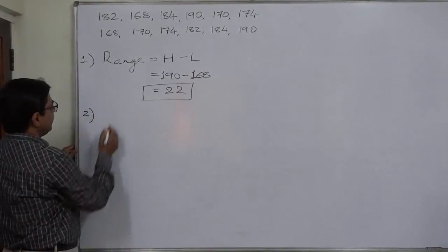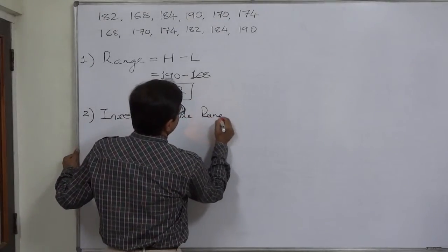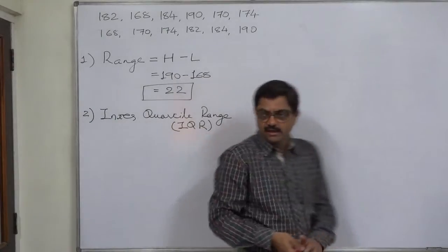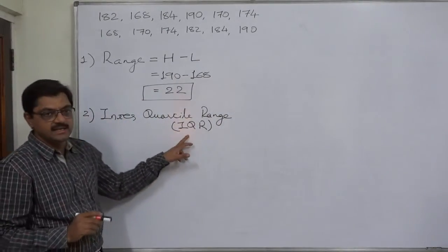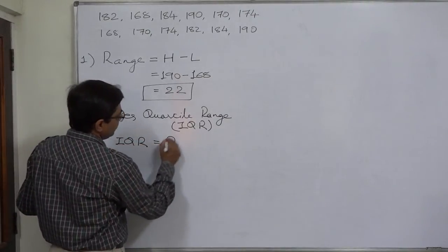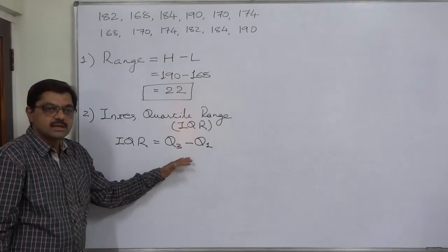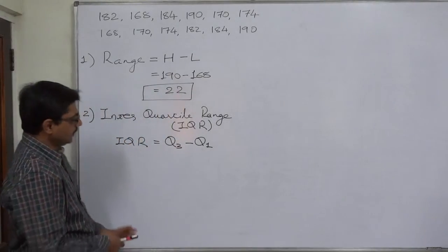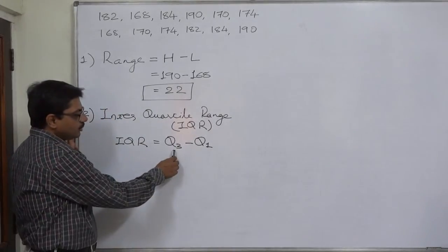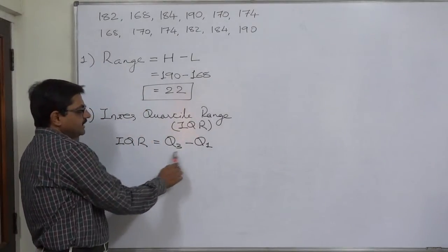The second is interquartile range, commonly known as IQR. Interquartile range is the difference between the highest quartile Q3 and the lowest quartile Q1. The formula is: IQR = Q3 − Q1. Many times it is also known as the limits of the central 50% data values, because by taking Q1 we forego the lowest 25% data values and by taking Q3 we forego the highest 25% data values, giving us the range of the central 50% data values.